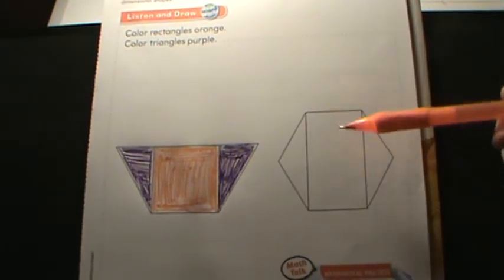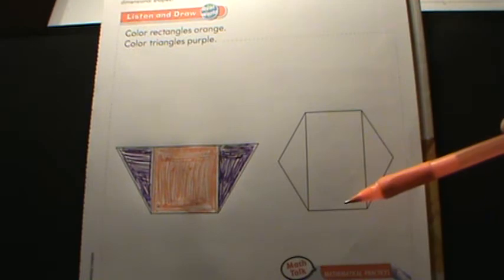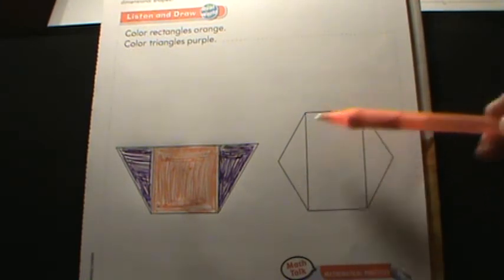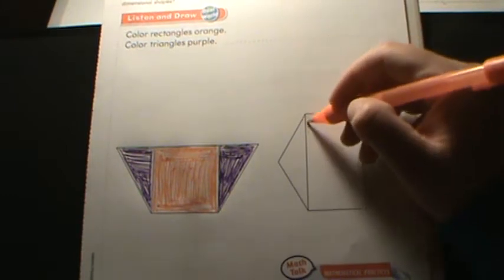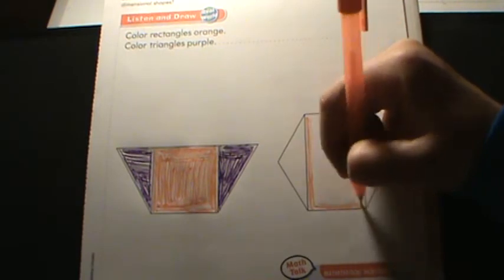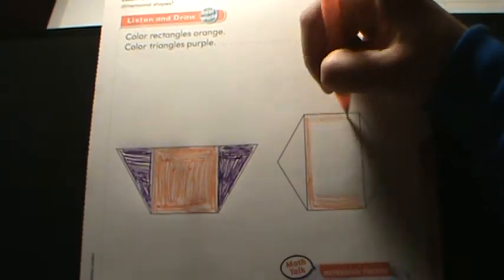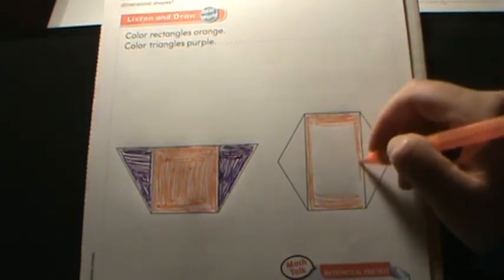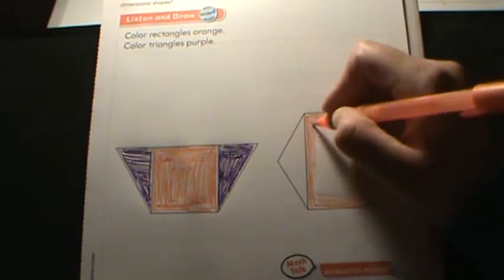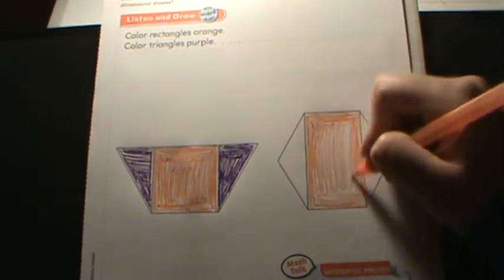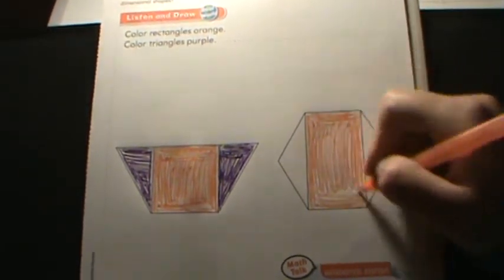Then over here, she used a rectangle and a different shape of a triangle and made a new shape. We're going to color our rectangle orange.